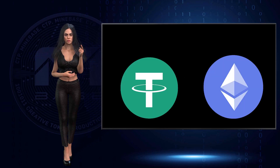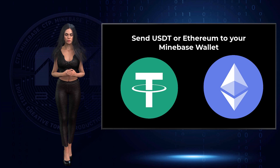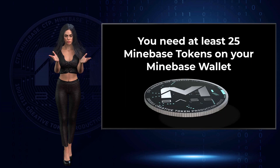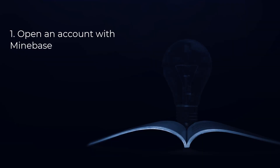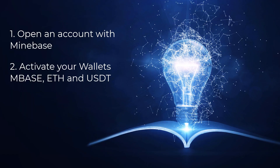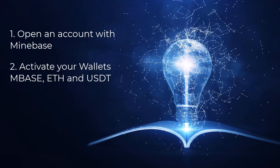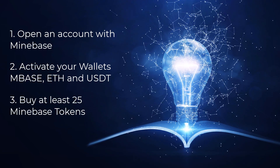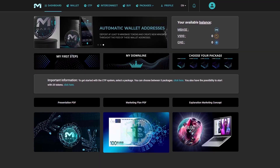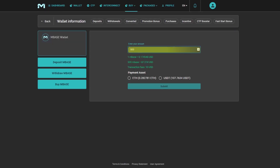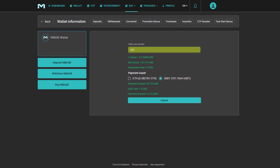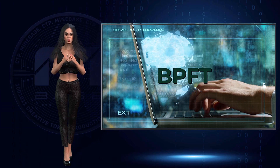We offer a wallet connected to the exchange. To buy tokens you need either USDT or Ethereum — send one of these cryptocurrencies to your wallet. You need at least 25 Minebase tokens to activate the CTP system. To buy tokens, go to the buy button, select 'Buy Minebase Tokens,' enter the number of tokens you would like to buy, select whether to pay with Ethereum or USDT, and click submit.